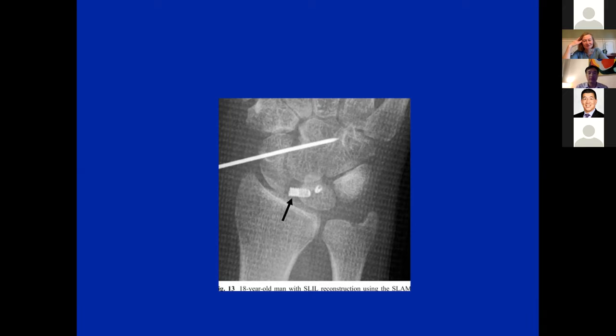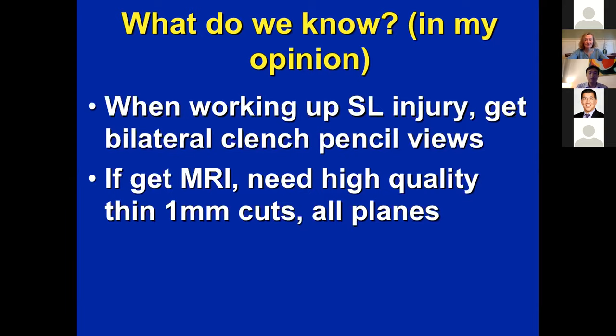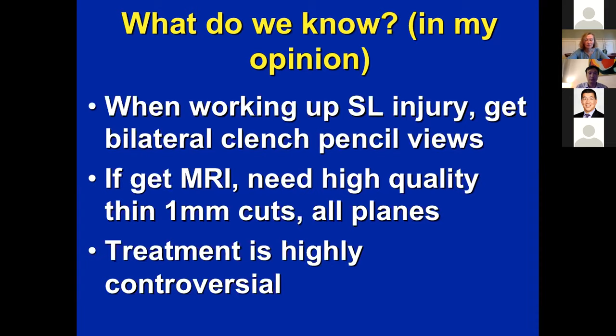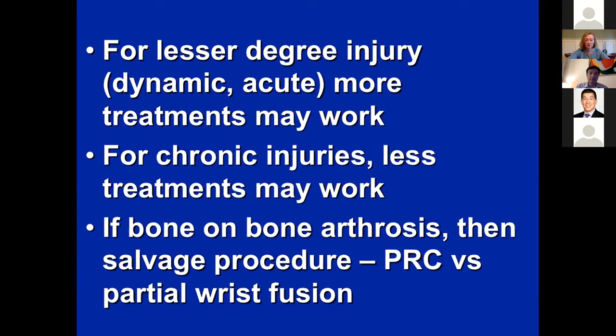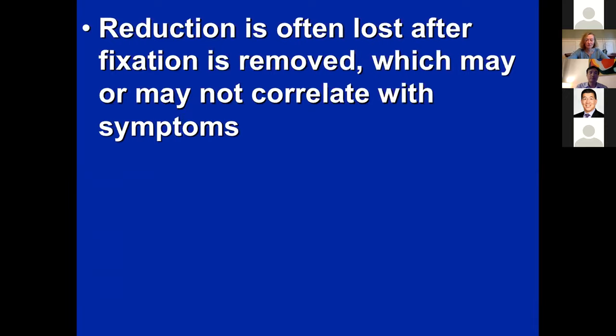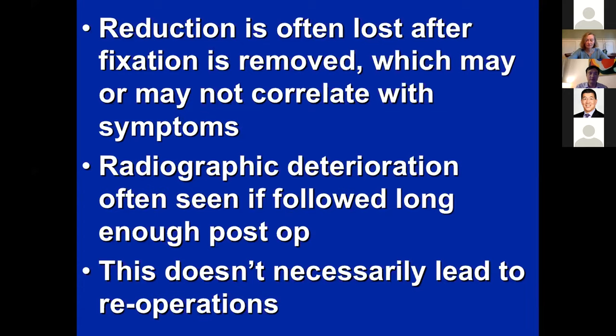So what do we know? When working with scapholunate injury, get bilateral clenched pencil views — very helpful, published in the Journal of Hand Surgery. If you get an MRI, you need high quality, thin 1mm cuts in all planes. Treatment is highly controversial. For lesser degrees of injury — dynamic, acute — more treatments probably work. For chronic injuries, fewer treatments work. If there's bone-on-bone arthrosis, go to salvage procedure — usually a proximal row carpectomy or partial wrist fusion. The reduction is often lost after fixation is removed, which may or may not correlate with symptoms. But if you don't have dorsal scaphoid translation, patients seem to do well for pain relief.